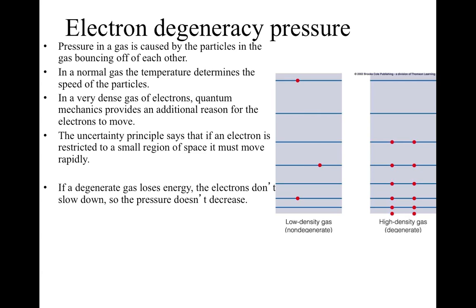But in a very dense gas that includes electrons, so a gas that's ionized, quantum mechanics provides an additional reason for the electrons to move. There's something called the uncertainty principle that says if an electron is in a very small region of space, it has to move very rapidly so as not to overlap with other electrons. The consequence of this is that if a degenerate gas loses energy, the electrons don't slow down, so the pressure doesn't decrease. The pressure is no longer sensitive to temperature.